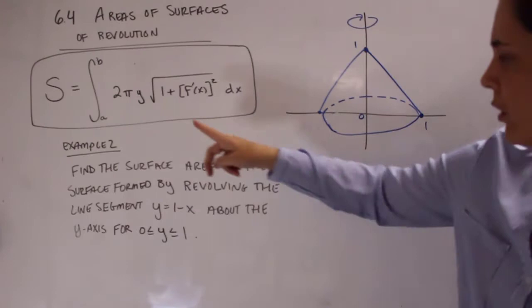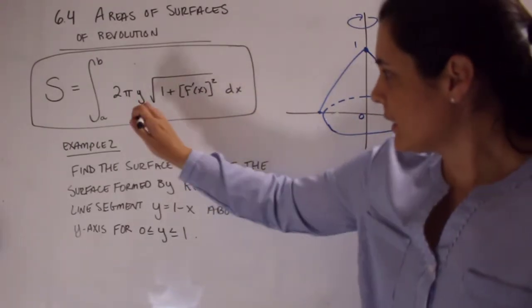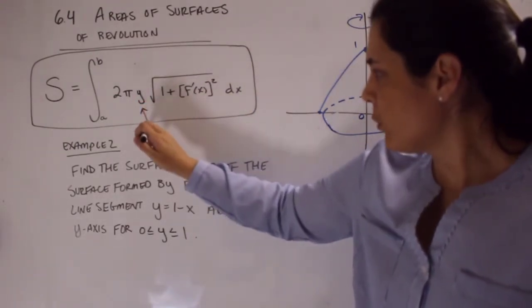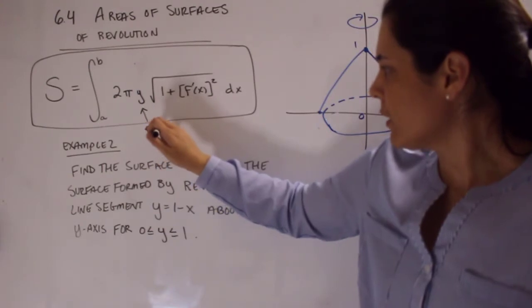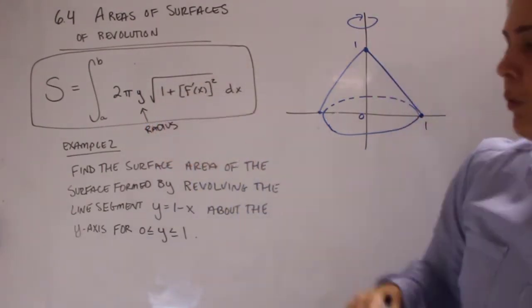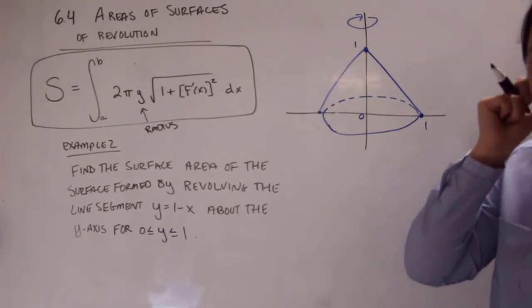Now, we have to find y. In this case, it's not necessarily going to be y. And you'll see why. This represented the radius. And then we also need to find the derivative of our function.